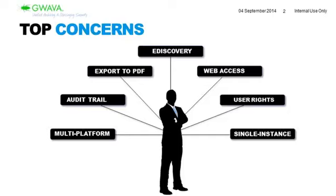Accessibility — meaning having end users and different named users with access to the archive. There's also the audit trail: an archive needs an audit trail to be able to monitor actions completed in the archive. Without it, there's an extra burden on IT to recover electronic communications.